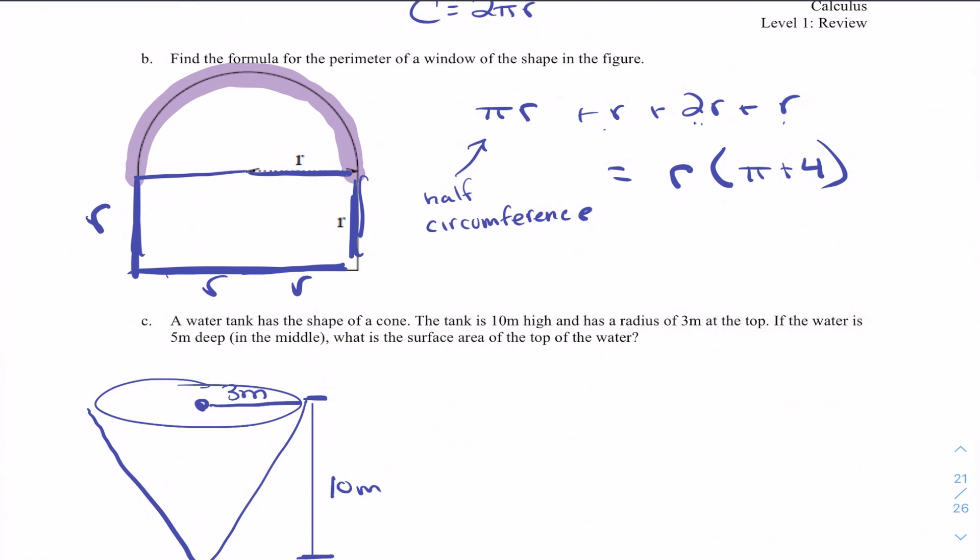The water is 5 meters deep. What is the surface area of the top of the water? So the surface area is A equals pi r squared. And what we're looking for is this radius down here.